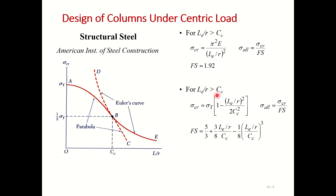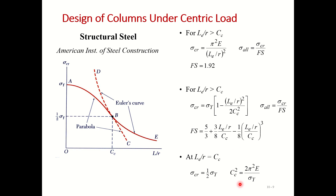For L/r less than Cc, sigma critical is based on sigma_y using a parabolic equation fit to the data. The factor of safety is determined from a given relation using Le, r, and Cc. Cc is calculated as √(2π²E / σ_y). When L/r equals Cc, sigma critical equals one-half sigma_y, which confirms the definition of Cc.